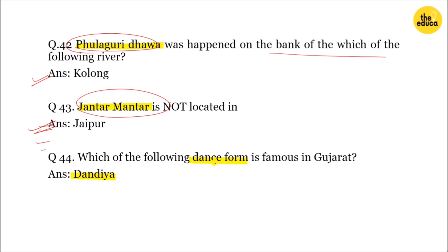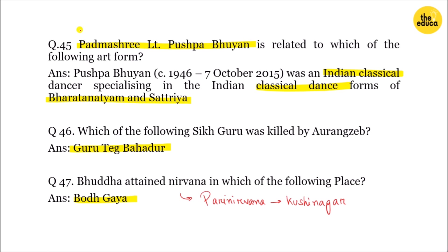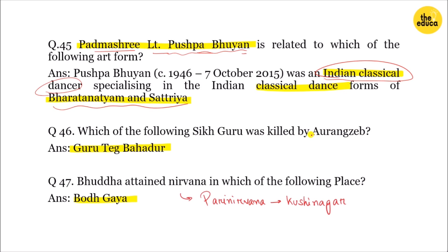The next question is about Indian art forms. The question relates to Indian classical dance. Another question asks which Sikh guru was killed by Aurangzeb.